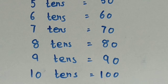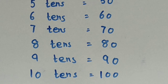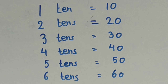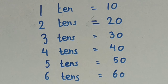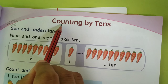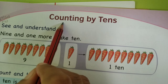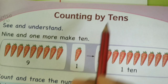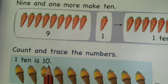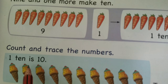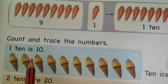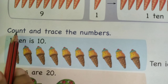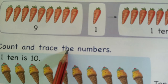So now from your maths book, page 33 — sorry, page 33. Take out your maths book, page 33. Counting by tens: we have already learned counting by tens, like one ten is ten, two tens is twenty. So we will do count and trace the numbers.